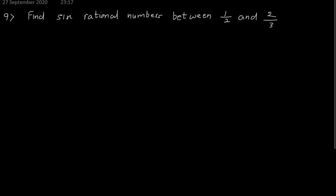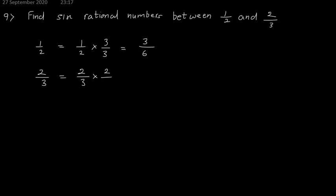The last question: find 6 rational numbers between 1 by 2 and 2 by 3. Write 1 by 2 as 1 by 2 into 3 upon 3, that is 3 upon 6. And 2 by 3 as 2 by 3 into 2 upon 2, which gives 4 upon 6. Between 3 and 4 I need to introduce 6 numbers, so I will multiply and divide by 7. That is how I can find 6 rational numbers between 1 by 2 and 2 by 3.